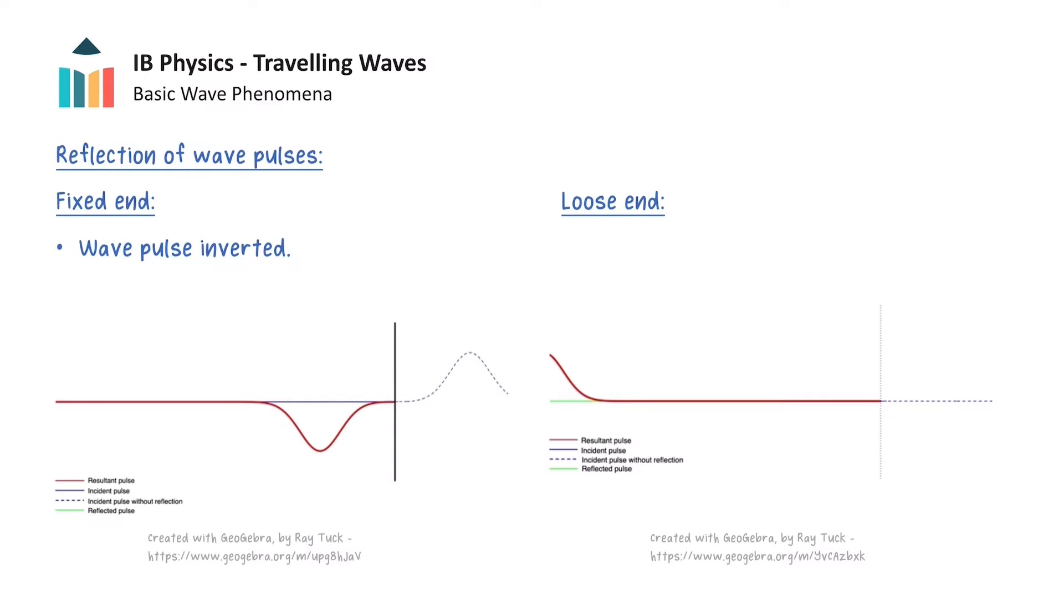We can now consider the rope with one loose end that is free to move, and send the same wave pulse through the rope. As the pulse reaches the loose end, the end of the rope moves upwards with the pulse.